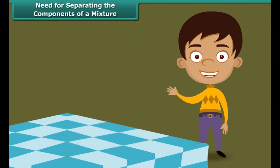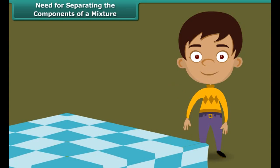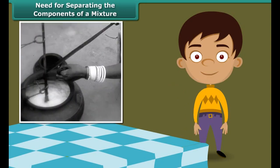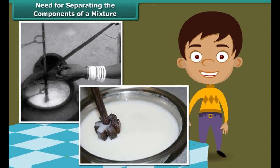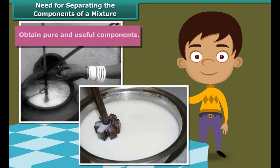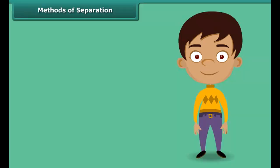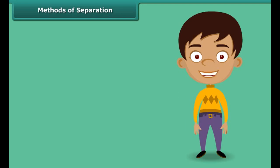When we churn milk or curd, we get two different but extremely useful products — butter and buttermilk. Thus, the third reason for separating the components of a mixture is to obtain pure and useful components. You would have some idea about the methods of separation, and in fact you would have used some of these methods in your day-to-day life. Let us list some methods commonly used to separate the components of a mixture.